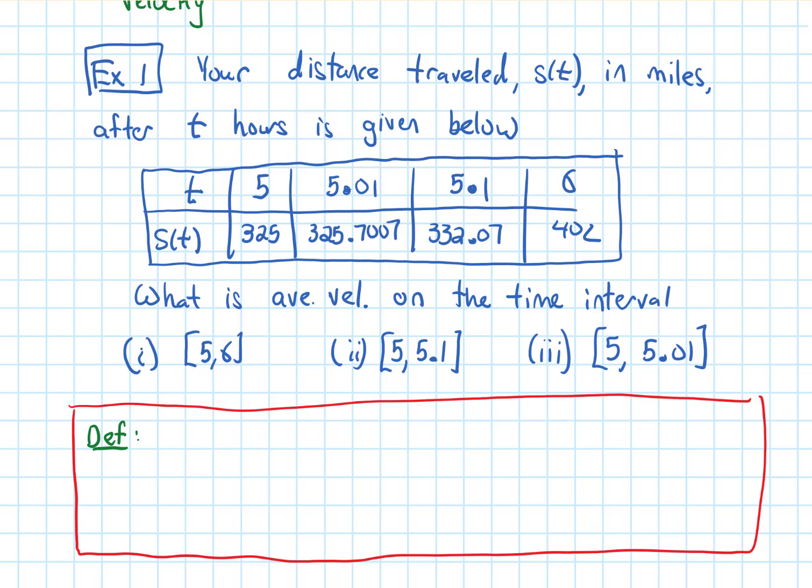So let's first define average velocity. So if we have an object that has position function S(t) at time t, the average velocity of the object on the time interval from a to b is measured as the change in position, which I'll call change in S, over the change in time.